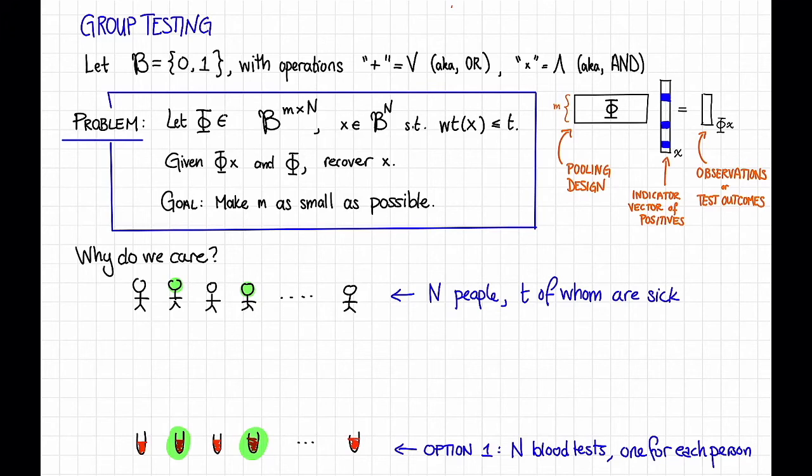So here's the second option. Option two is to pool blood samples. That is, we're going to have only m tests, where m is much less than n. Say just those tests. But in each test, we're going to mix multiple different people's samples.